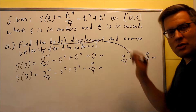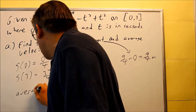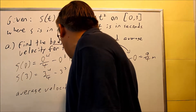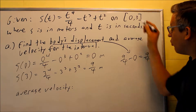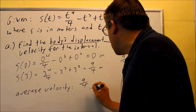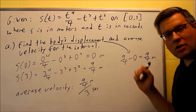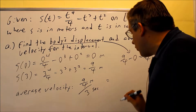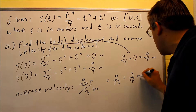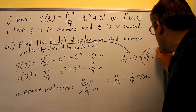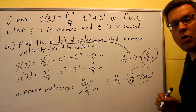Nine fourths will be the body's displacement over the time interval. Second, I want to find the average velocity. We can find that by taking the displacement divided by the total time, which is three seconds. We're going to do nine fourths divided by three — we have meters and seconds, so when we divide them we get meters per second. When we simplify, we get nine twelfths, which is the same as three fourths meters per second. So here are your two answers: displacement is nine fourths meters, and average velocity is three quarters meters per second.